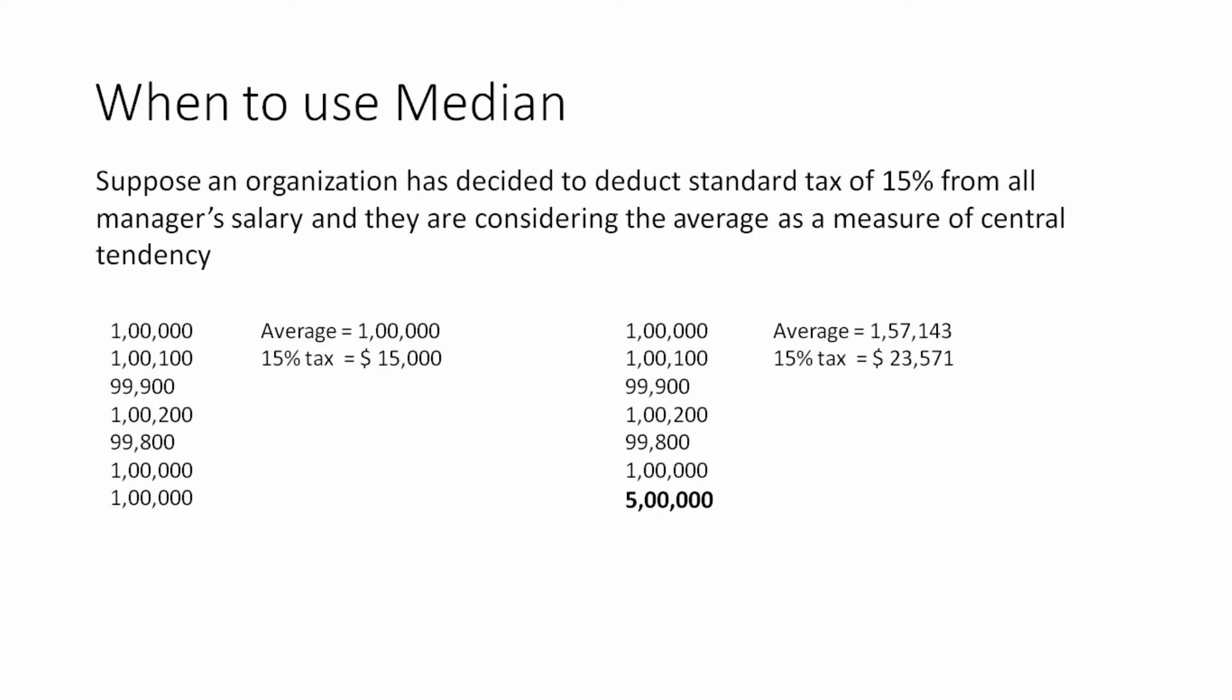Now let us calculate median and see what happens. Now we have to arrange our data into ascending or descending order. I have arranged my data into ascending order. And the median identified is $100,000. So a standard tax of $15,000 would be deducted from the salary. And that would be correct as well. If your data is normally distributed, you should use mean. And if your data is non-normally distributed, you should use median. Or you can say if your data has outliers, you should use median.